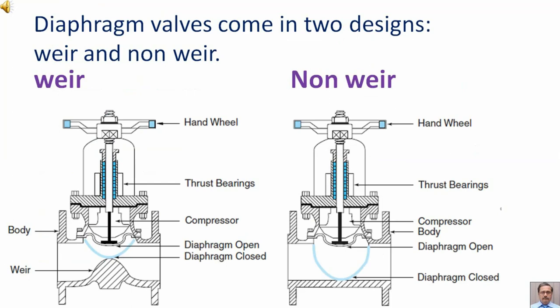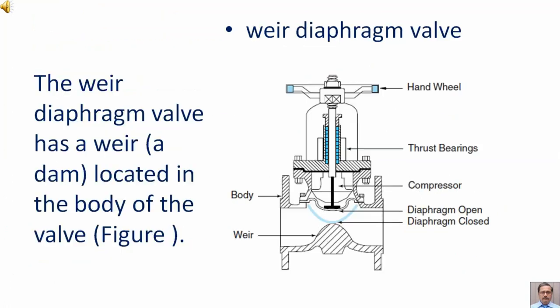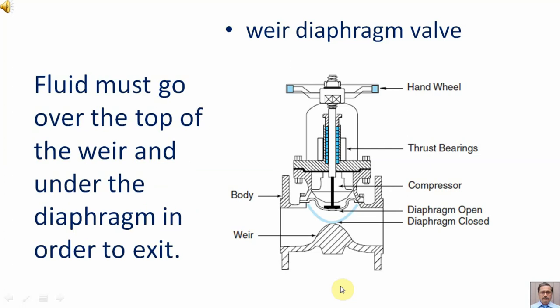Diaphragm valves come in two designs: weir and non-weir. The weir diaphragm valve has a dam located in the body of the valve. Fluid must go over the top of the weir and under the diaphragm in order to exit.